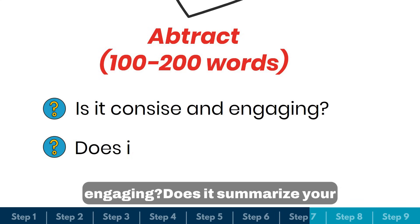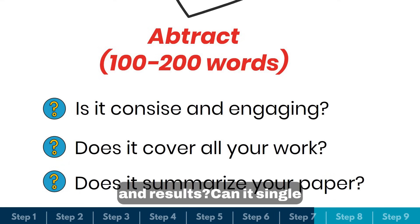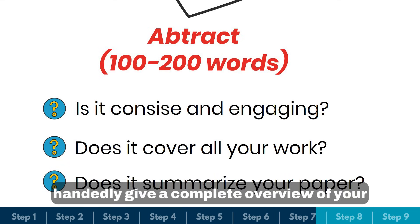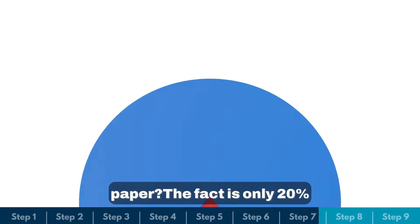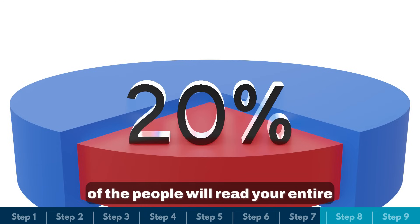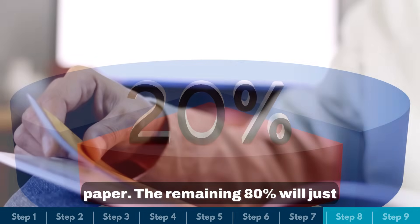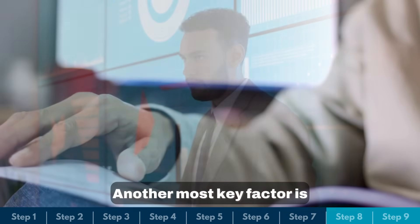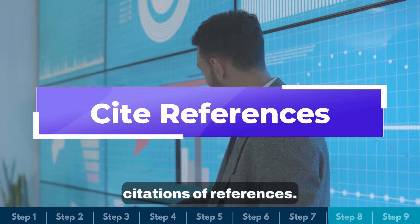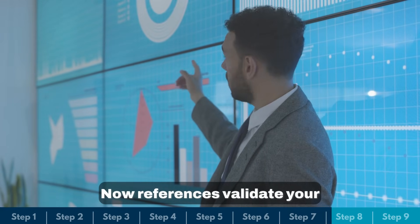Some questions to ask when writing your abstract: Is it concise and engaging? Does it summarize your research problem, methodology, and results? Can it single-handedly give a complete overview of your paper? The fact is only 20% of people will read your entire paper — the remaining 80% will just read your abstract and move on to the next paper.